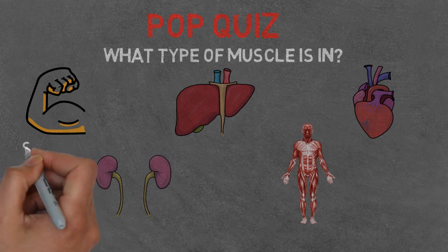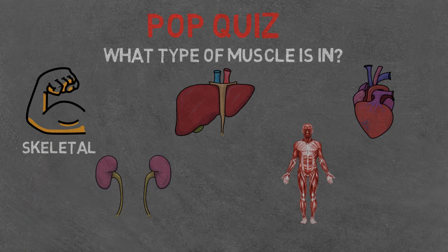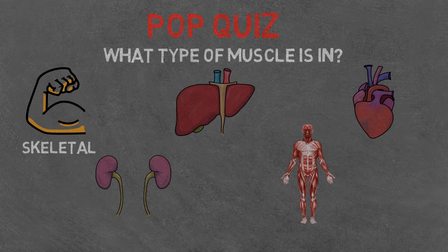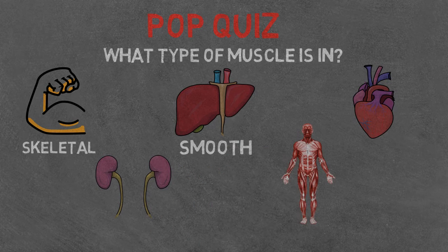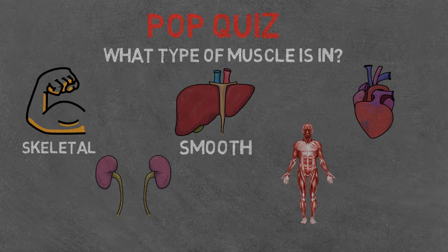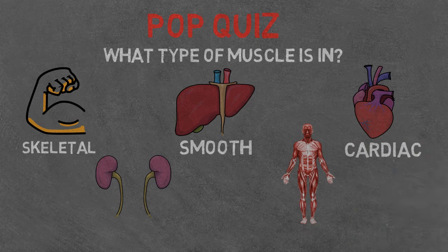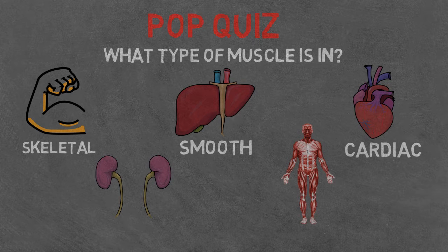The bicep is skeletal, as you control when your arm flexes or extends. The liver is smooth, as you don't have any conscious control over it. The heart is cardiac. As we said before, it is the muscle responsible for pumping the blood around the body.